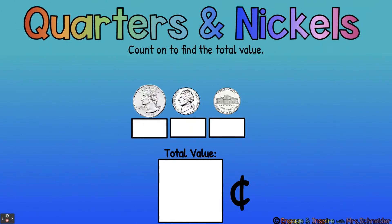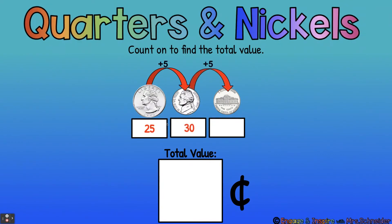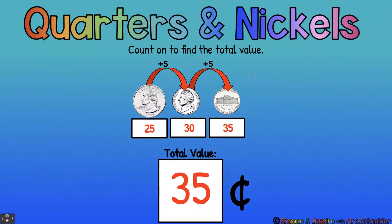Let's try again. Count our quarter — that's 25 cents — and now count by 5: 5, 10, 15, 20, 25, 30, and 30 plus 5 is 35. So the total value of a quarter and two nickels is 35 cents.